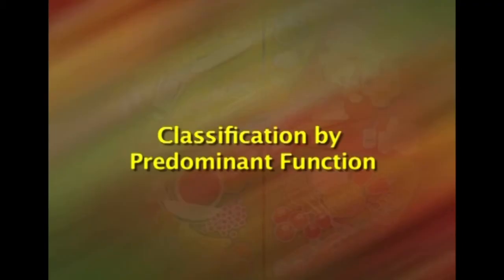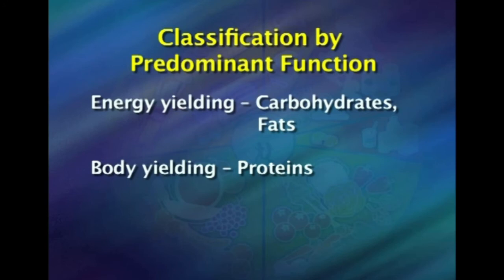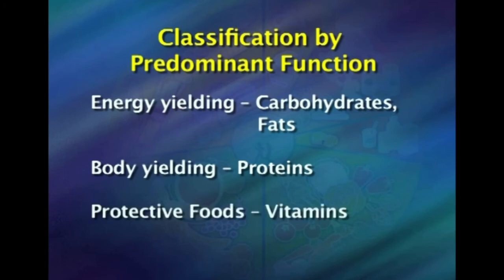The third classification of food is based on the functions they perform. They are classified as energy-yielding foods, body-building foods, and protective foods. Energy-yielding foods include carbohydrates and fats. Body-building foods include proteins, and protective foods include vitamins and minerals.